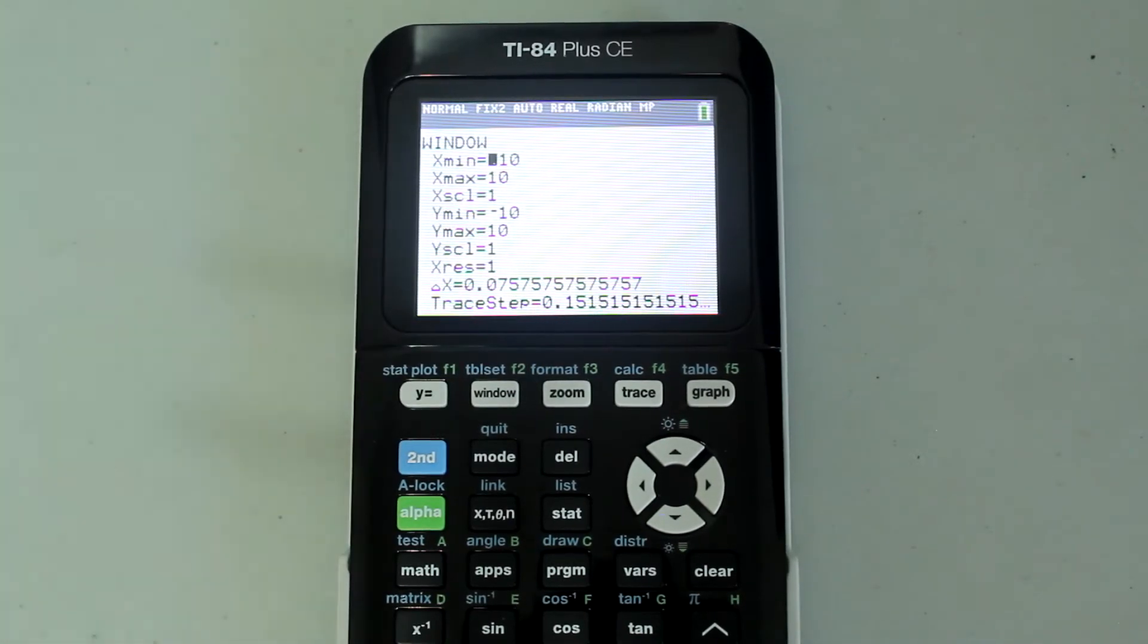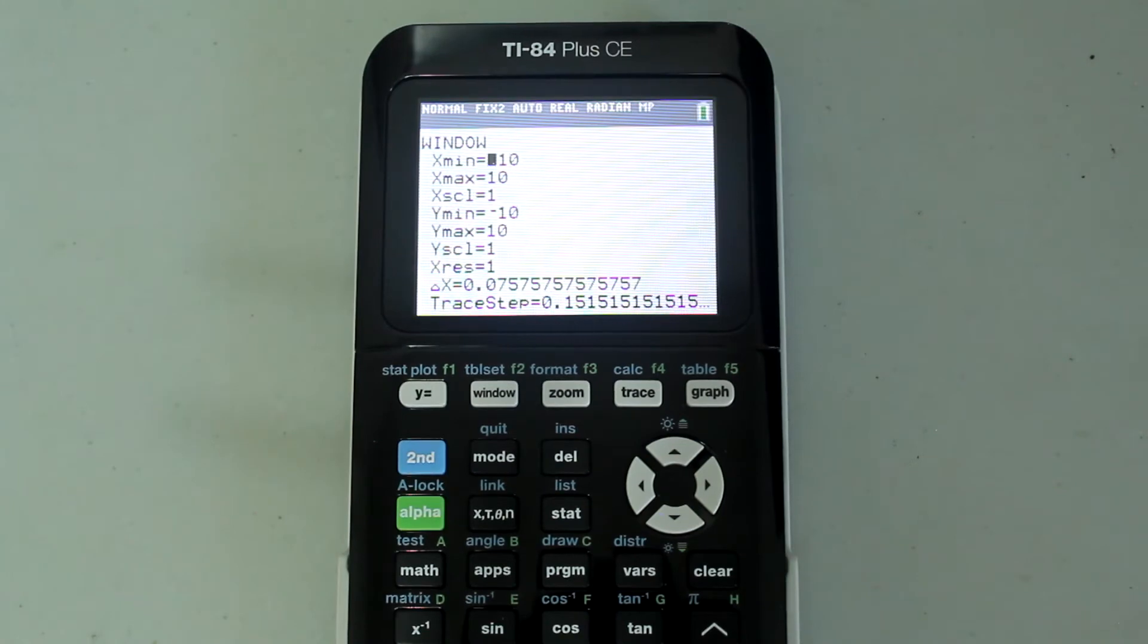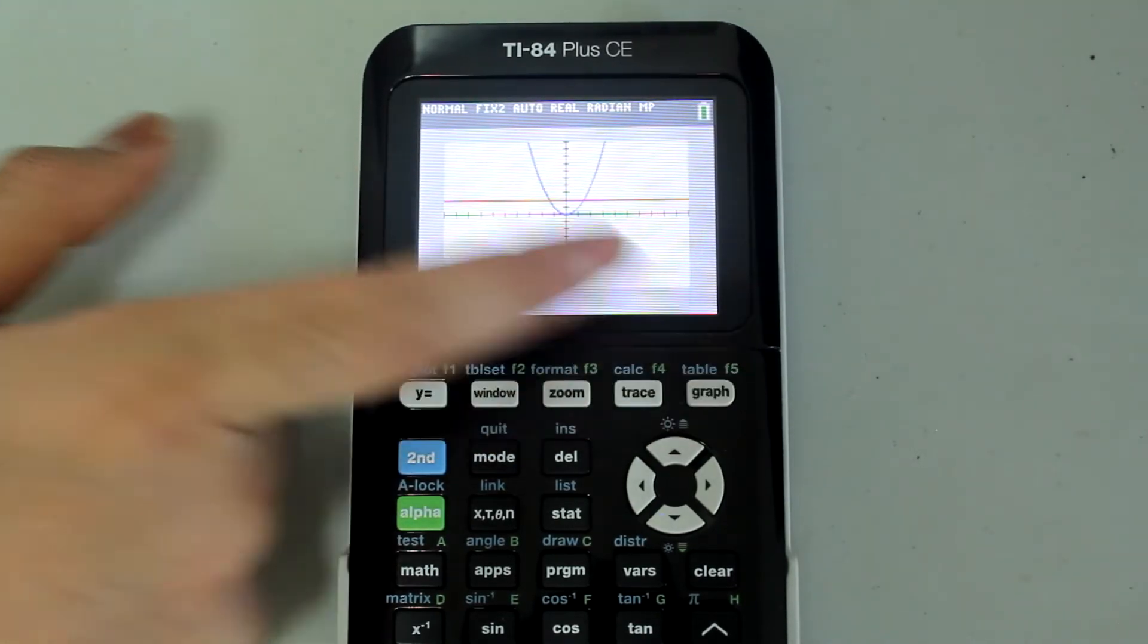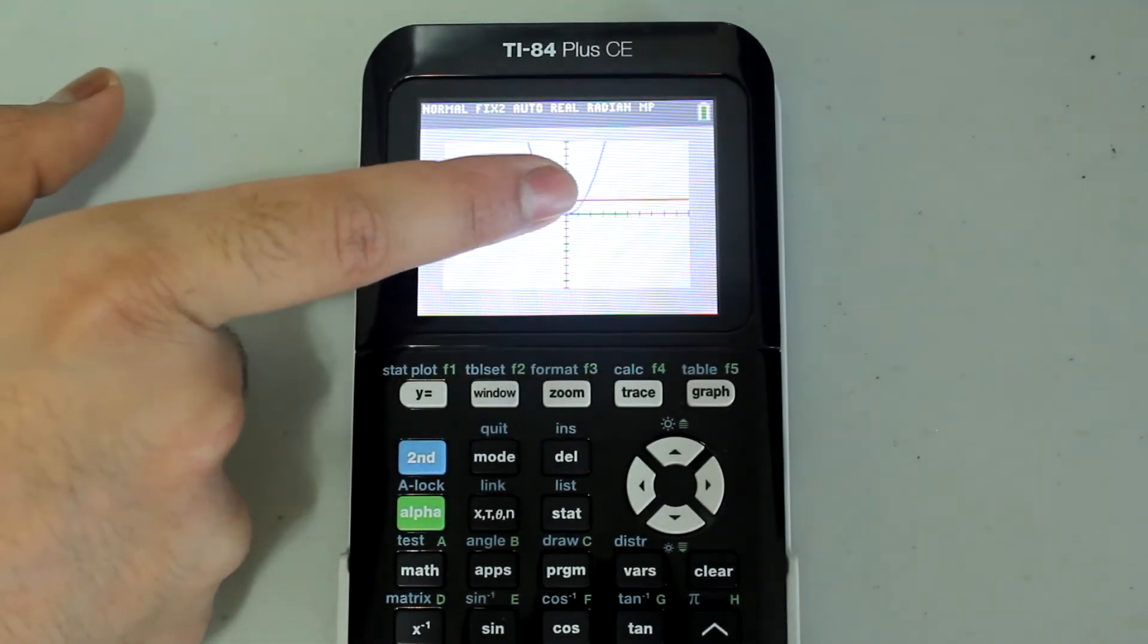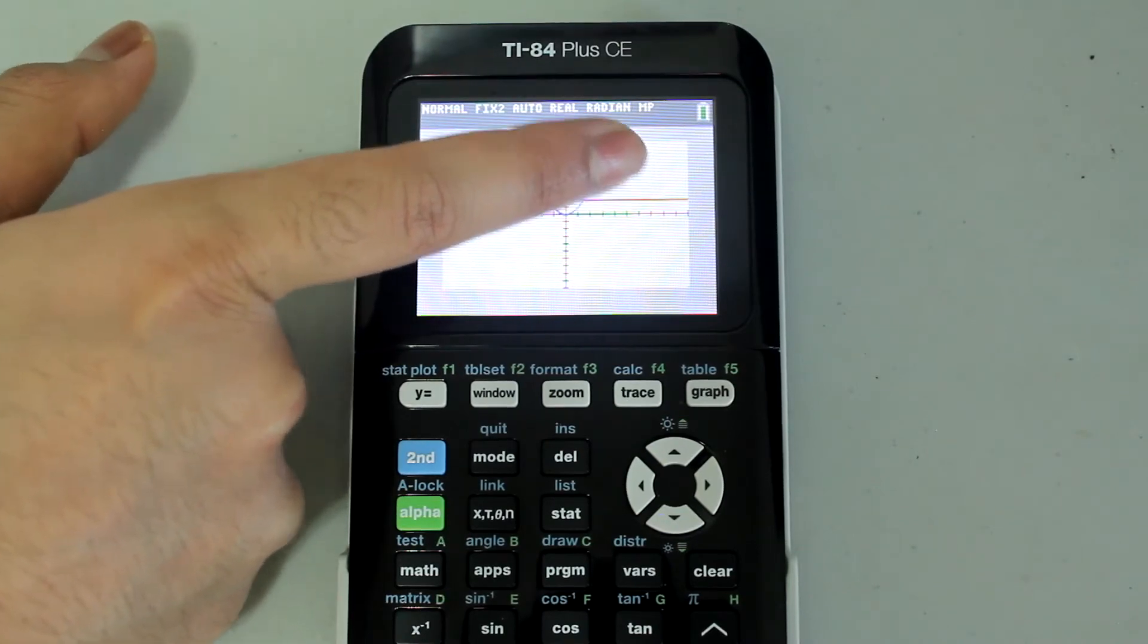The x scale and y scale values signify the space between markings on the x and y axis respectively. Now since the x and y scales are both 1, the markings go up by 1. So I have 1, 2, 3, 4, 5, 6, 7, 8, 9, and 10.